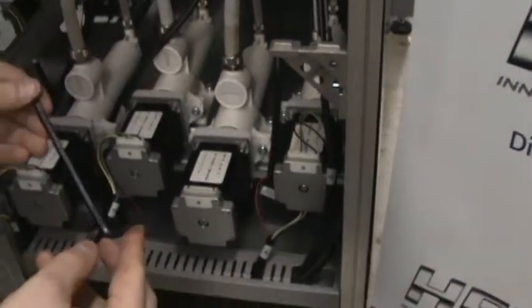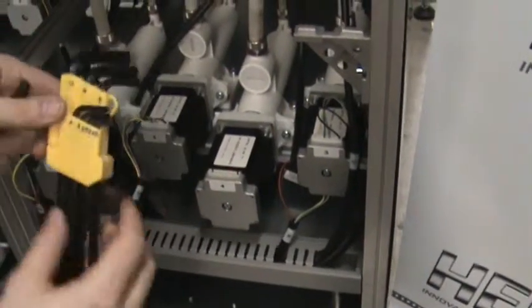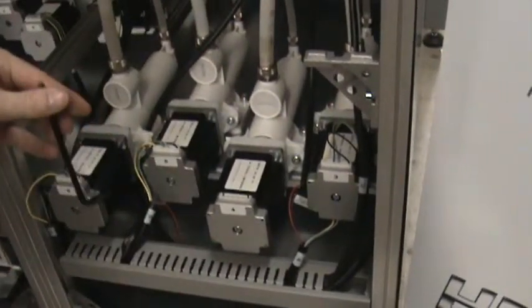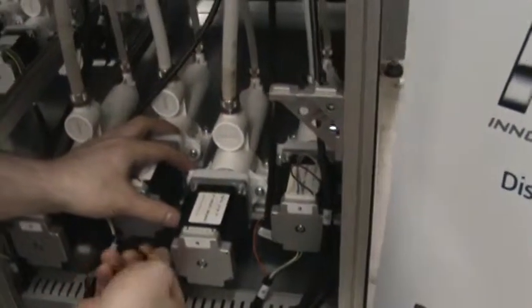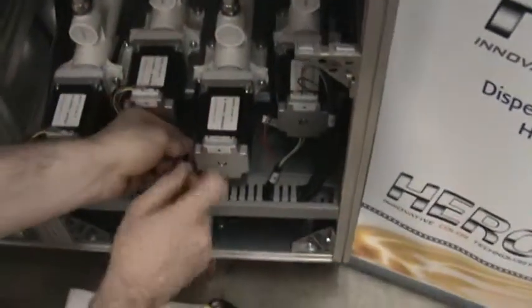Find a 5mm Allen key, which should have come in a set when you got your machine, and loosen off the bolts that hold your pump in place.